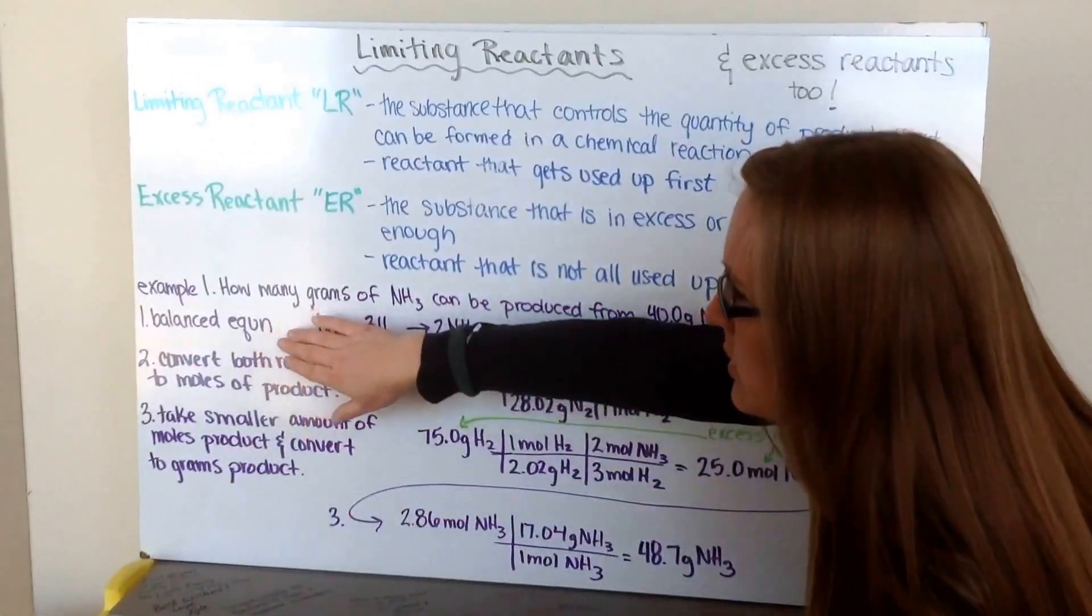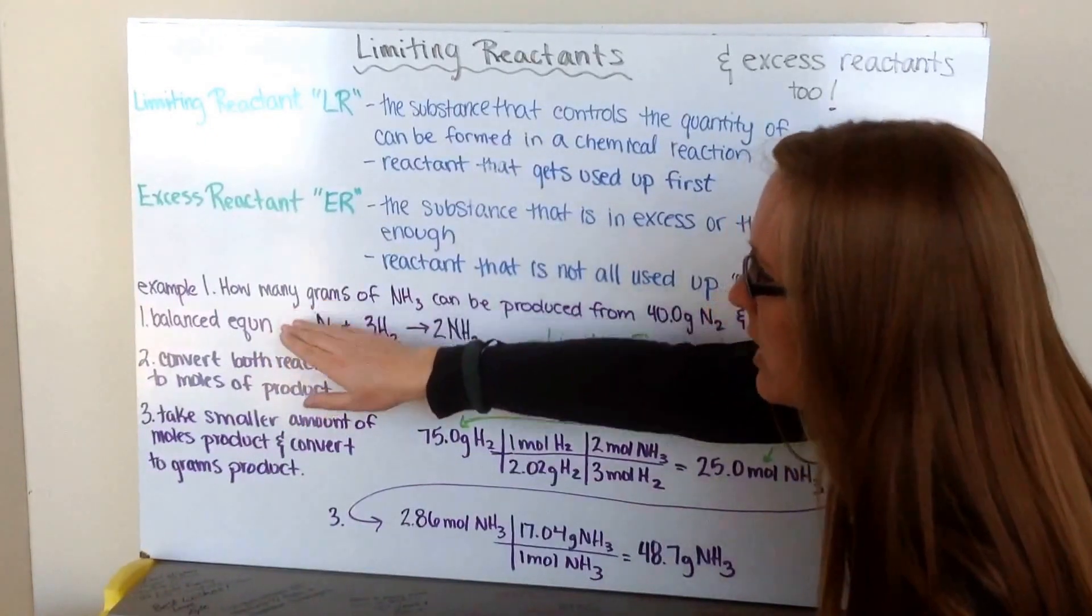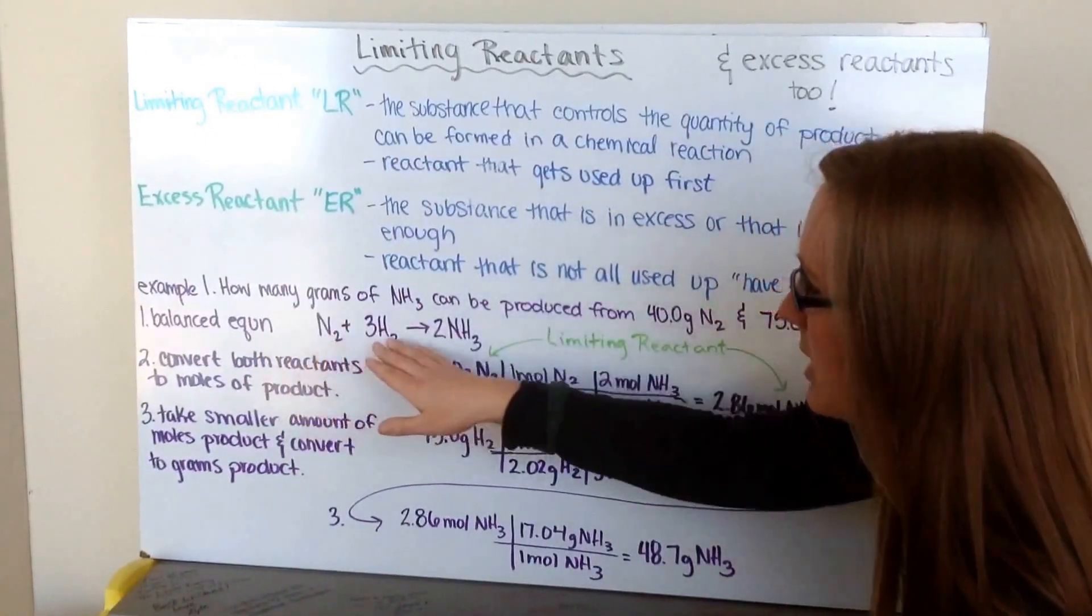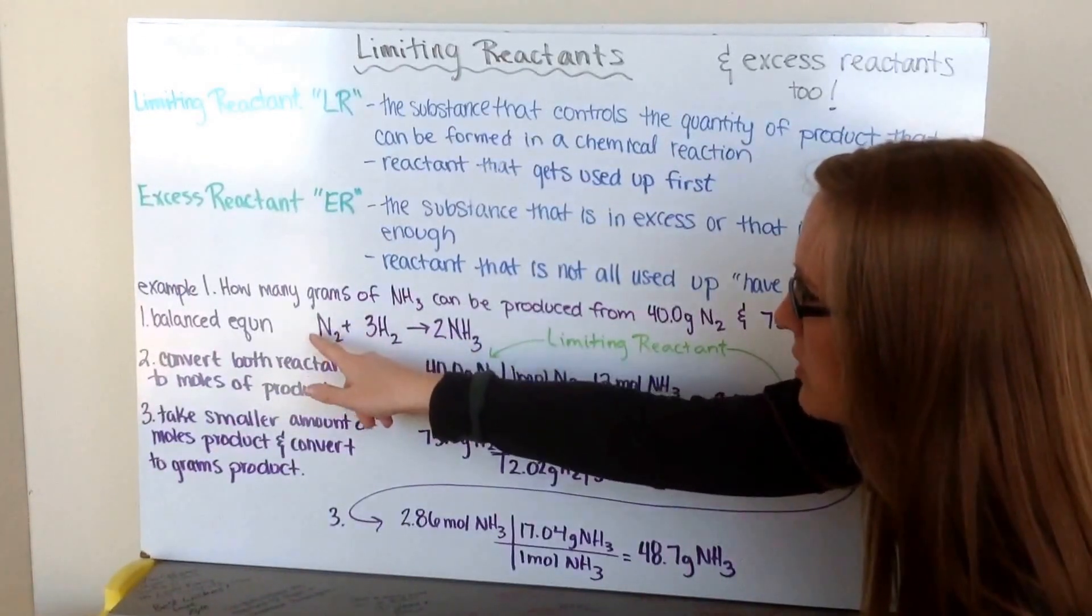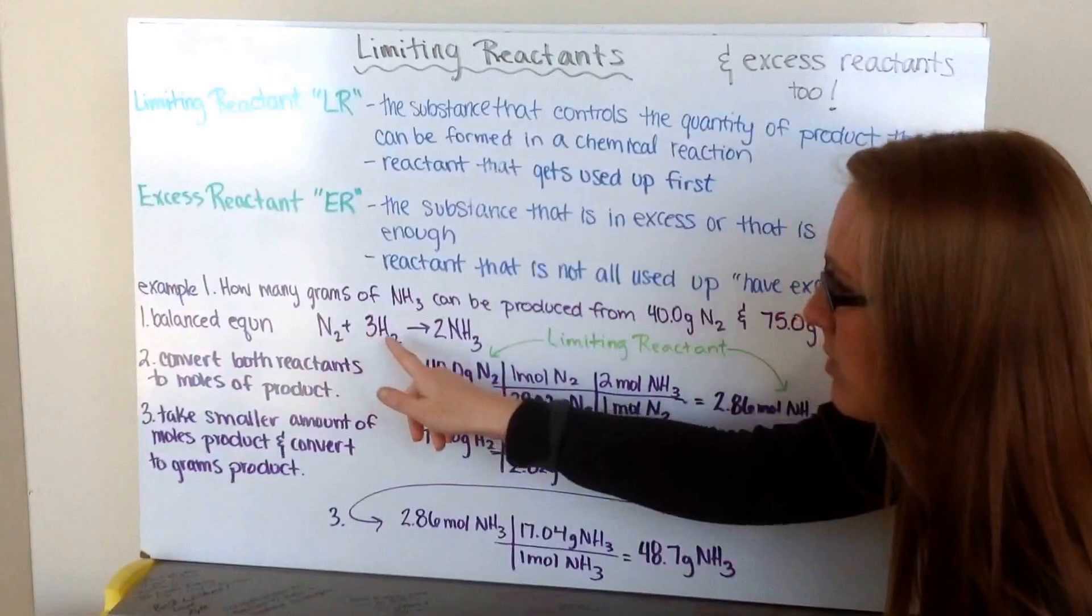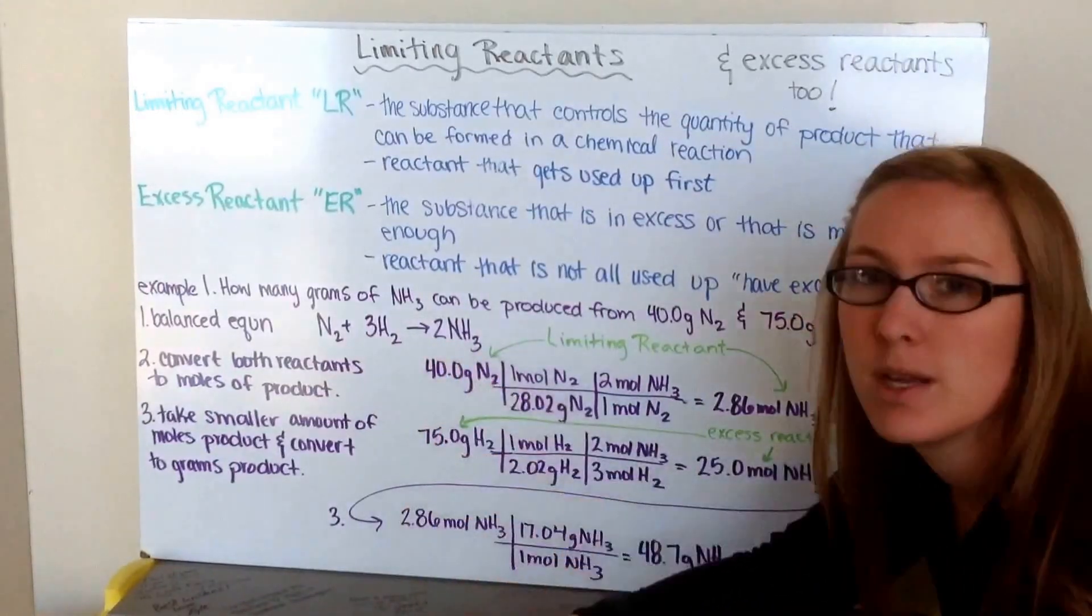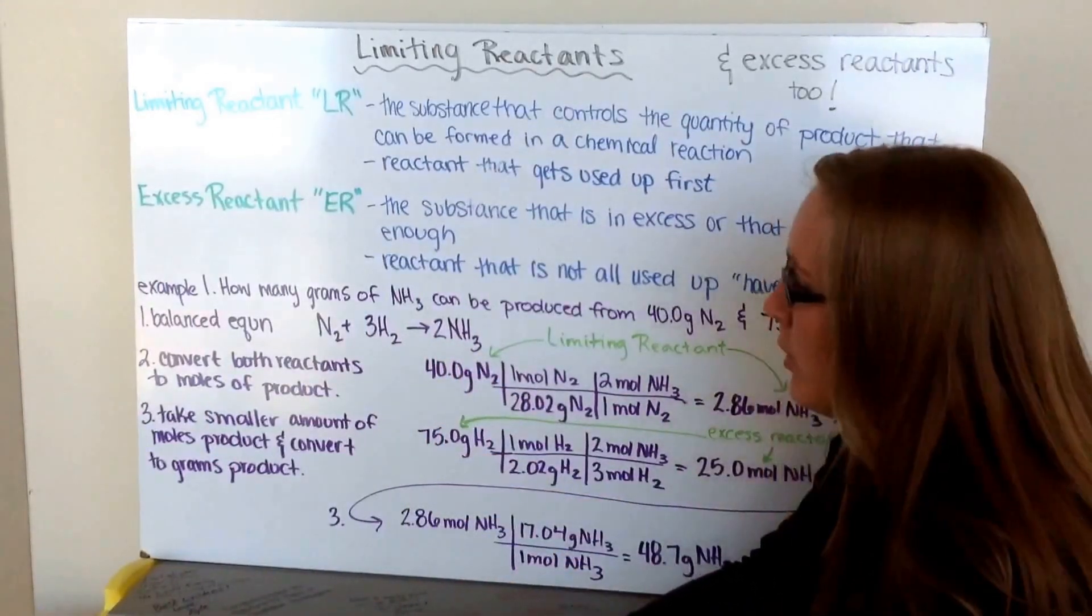rule number one or step one is we need to make a balanced chemical equation. I have N2 plus H2 yields ammonia. I need one coefficient in front of my nitrogen, three in front of my hydrogen, and two in front of my ammonia. This is the same reaction we've been using for quite a few examples.